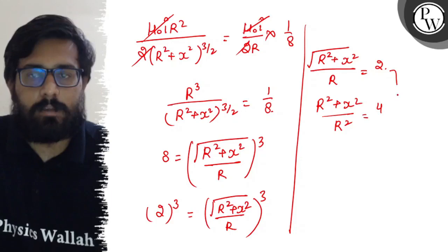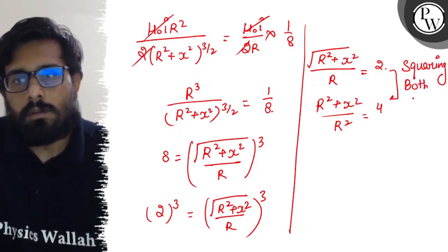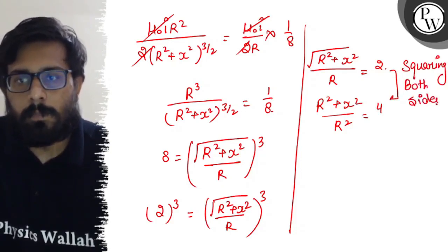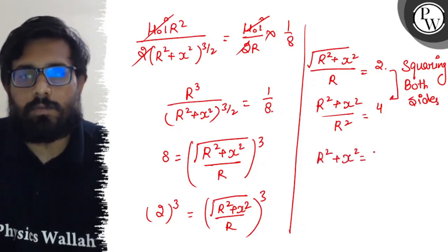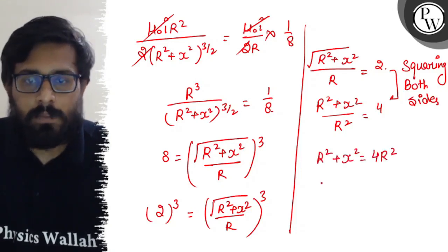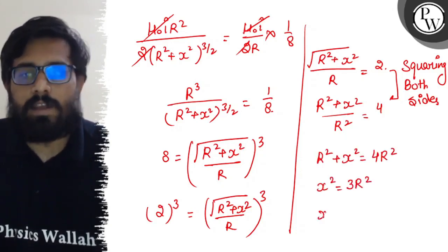Squaring both sides, we get (R² + x²) upon R² is equal to 4. So R² + x² is equal to 4R². X² comes out to be 3R², so the value of x comes out to be √3R.